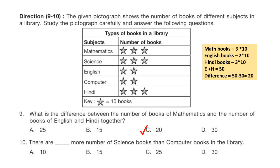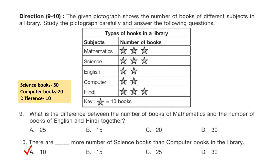Question 10: There are how many more science books than computer books in the library? The correct answer is option A, which is 10.